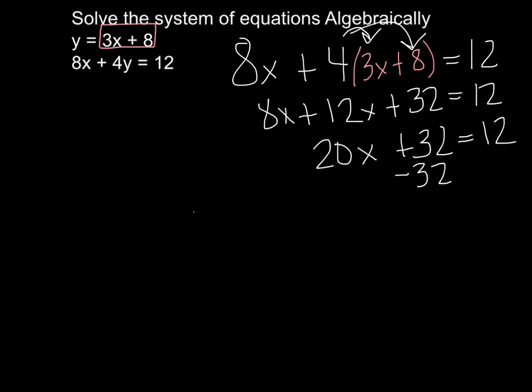Subtract 32 from both sides. 20x equals negative 20. So x is equal to negative 1.